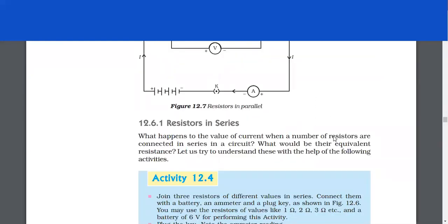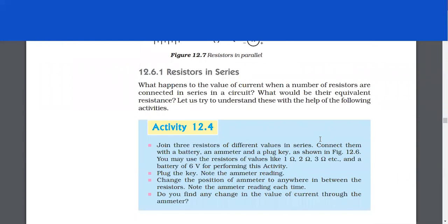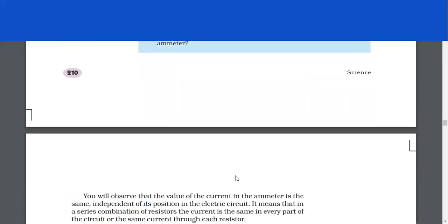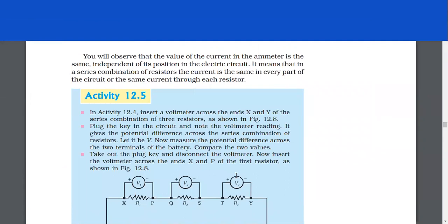Resistors in series. What happens to the value of current when a number of resistors are connected in series in a circuit? What would be their equivalent resistance? Activity 12.4: Join three resistors of different values in series. Connect them with a battery, an ammeter and a plug key as shown in figure 12.6. You may use resistors of values like 1 ohm, 2 ohm, 3 ohm, etc., and a battery of 6 V. Plug the key and note the ammeter reading. Change the position of the ammeter to anywhere in between the resistors and note the ammeter reading each time. You will observe that the value of the current in the ammeter is the same independent of its position in the electric circuit. It means that in a series combination of resistors, the current is the same in every part of the circuit, or the same current flows through each resistor.